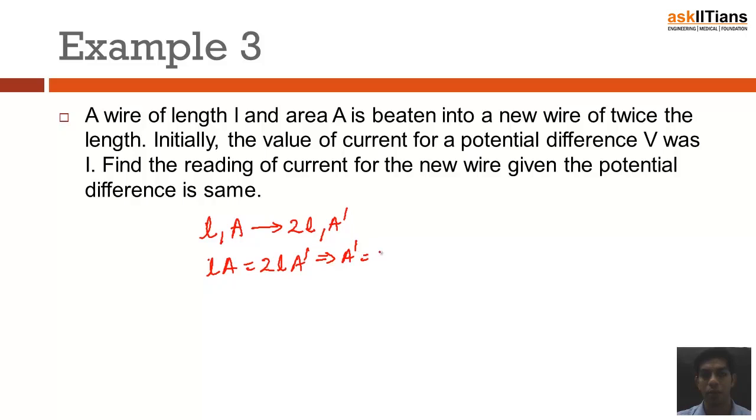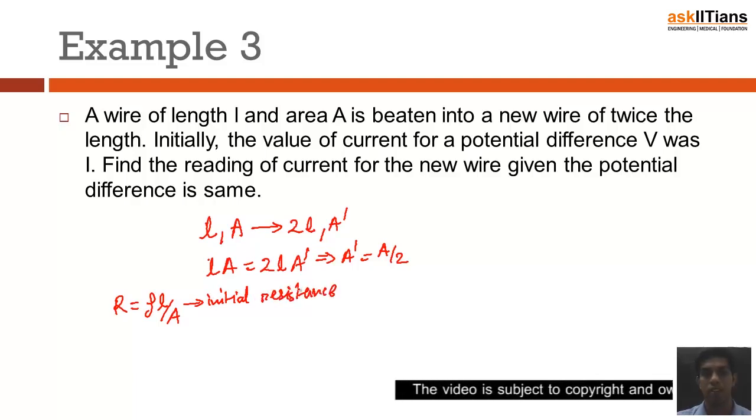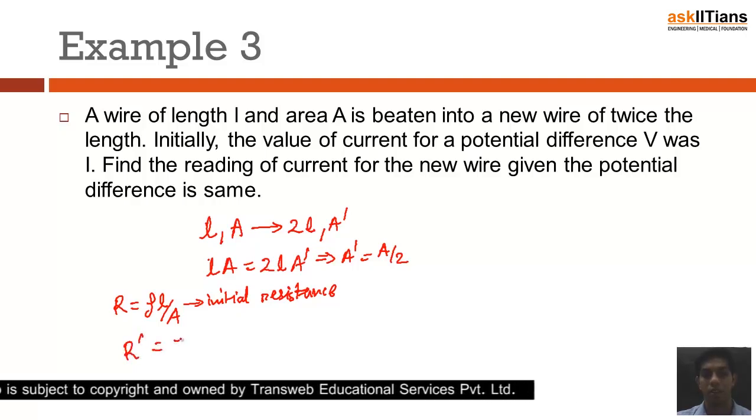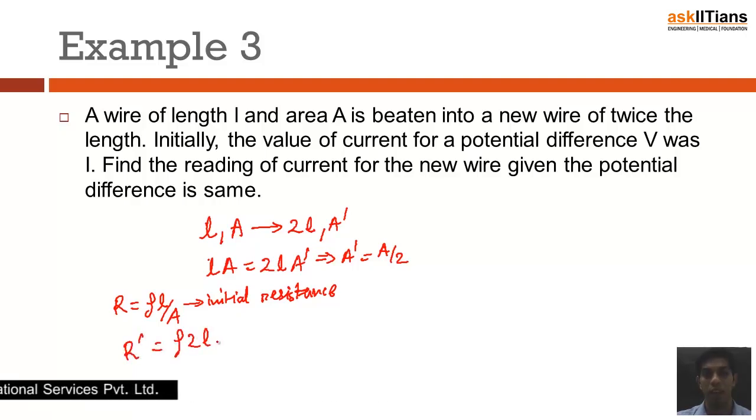You also know that R is equal to ρL by A, so let's term this as the initial resistance. This is my initial resistance. Now the final resistance is R' equal to ρ times the new length 2L divided by the new area A by 2. So this comes out to be 4ρL by A.